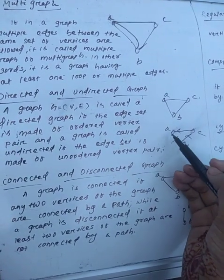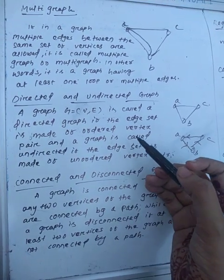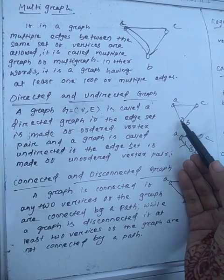So if there is a direction, then we call it a directed graph. Otherwise, it is called an undirected graph.